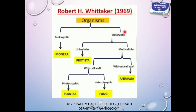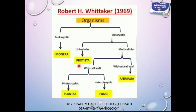Eukaryotes are classified into two groups based on the number of cells: unicellular and multicellular. Unicellular eukaryotes include only one kingdom, Kingdom Protista. Monerans are unicellular prokaryotes, whereas Protistans are unicellular eukaryotes — that is the contrasting difference between Monera and Protista.